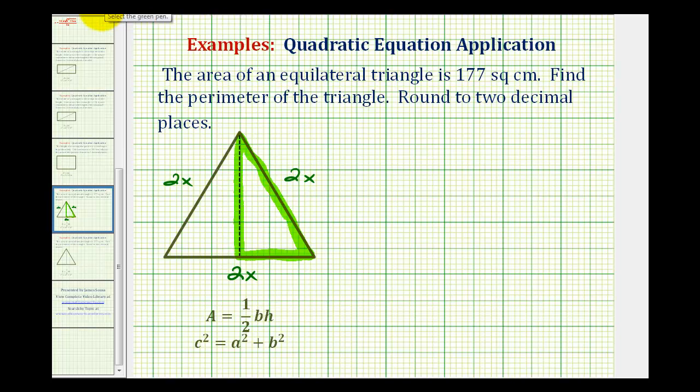But before we do this, we need to recognize a couple things. First, if the length of this side is 2x, the height is going to bisect this side. So the length of this side here would be x, and then we'll call this h for height. Again, our goal is to express the height in terms of x.